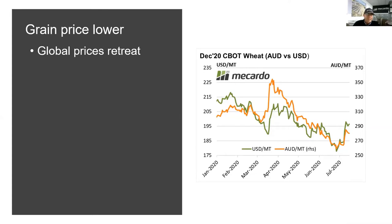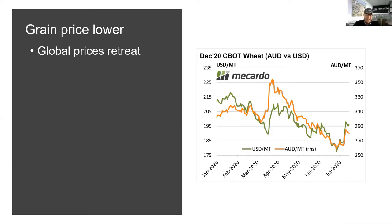The volatility is based really on what's happening in the Northern Hemisphere — things happening in the North really influence what happens to our prices. This chart here is tracking both the Aussie dollars per metric tonne and the US dollars per metric tonne. You can see there's a steady fall, but also a tick up towards the end, which we'll talk about in a minute.